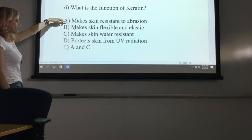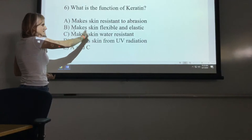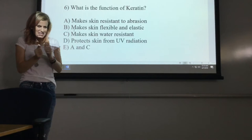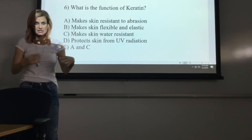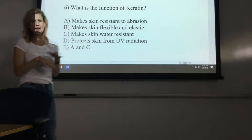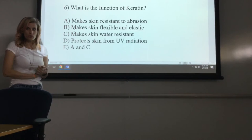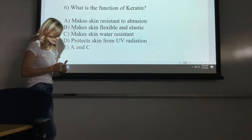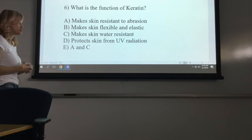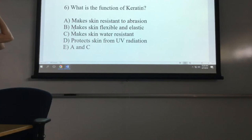So what's the function of keratin? Keratin makes the skin resistant to abrasion — yes, that's true. Keratin makes the skin flexible and elastic? No — keratin makes it strong. Elastin or elastic fibers make the skin flexible and elastic; those are present deeper in the skin. Makes the skin water resistant — yes, that's true; keratin is what makes the skin a good barrier to water. Protects the skin from UV radiation? That's melanin — melanin is the pigment that protects from UV radiation. So A and C were both correct, making the answer E.